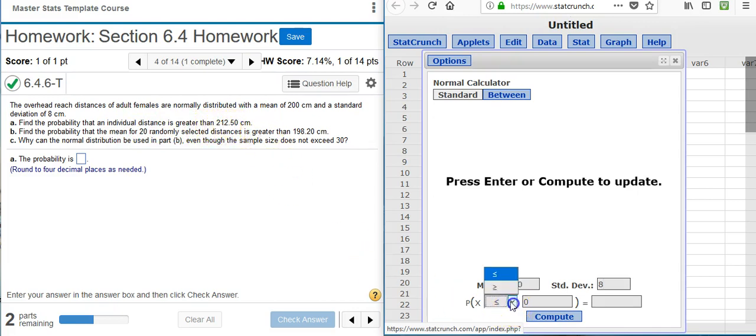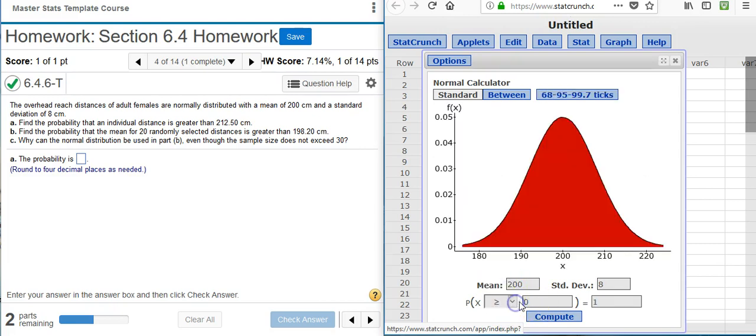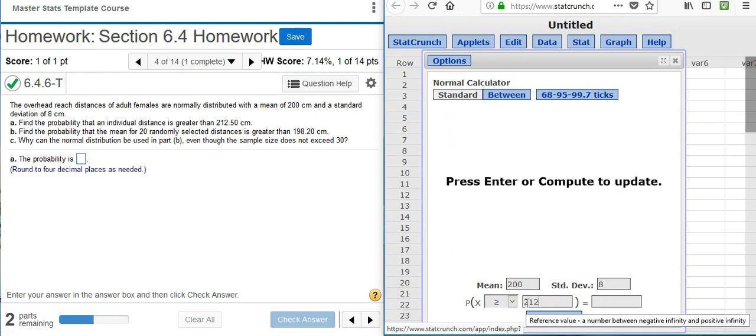Here the problem statement asks us to find the probability for an individual distance greater than 212.5 centimeters. So down here, I'm going to put greater than from the drop down menu, 212.5 for the random variable, and then click on compute.